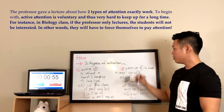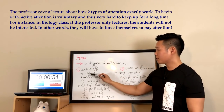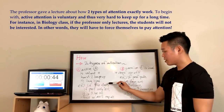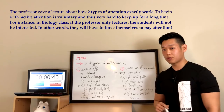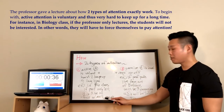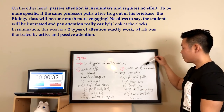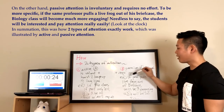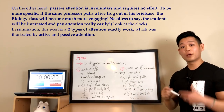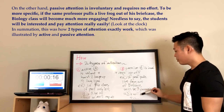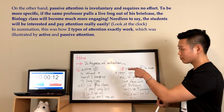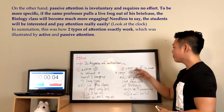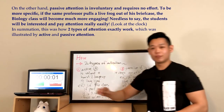Sample response: 'The professor gave a lecture about how two types of attention exactly work. To begin with, active attention is voluntary and thus very hard to keep up for a long time. For instance, in biology class, if the professor only lectures, the students will not be interested — in other words, they will have to force themselves to pay attention. On the other hand, passive attention is involuntary and requires no effort. To be more specific, if the same professor pulls a live frog out of his briefcase, the biology class will become much more engaging. Needless to say, the students will be very interested and pay attention really easily. In summation, this was how two types of attention exactly work, illustrated by active and passive attention.'